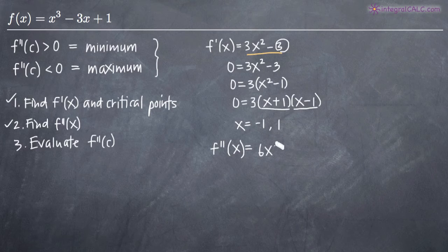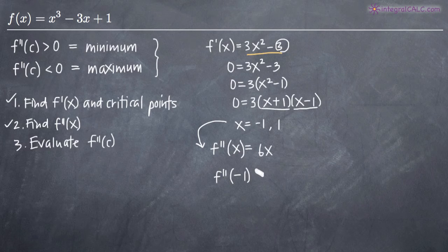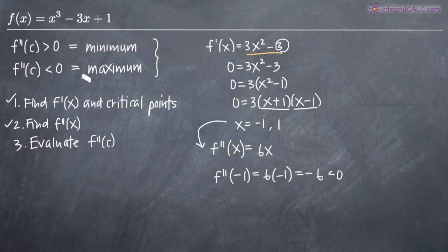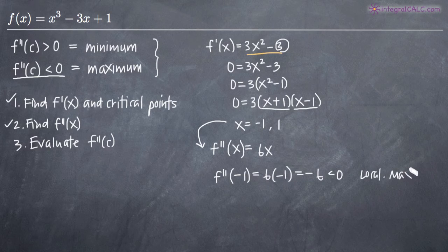To define the nature of each critical point, we plug our critical points into the second derivative. Plugging in negative 1: f double prime of negative 1 equals 6 times negative 1, which gives us negative 6. Negative 6 is less than zero, which means the critical point x equals negative 1 represents a local maximum. It may represent a global max, but we would need to determine where the function is increasing and decreasing to confirm that.